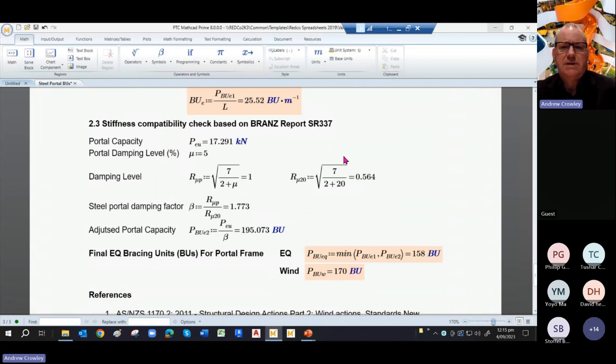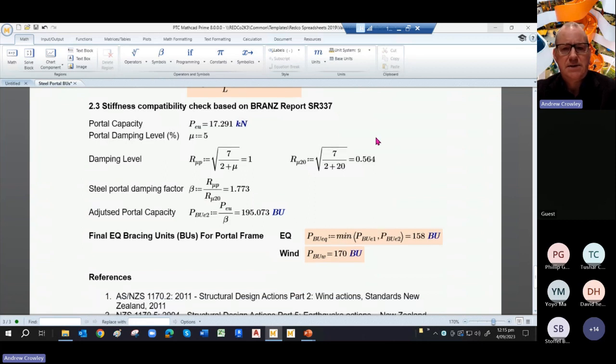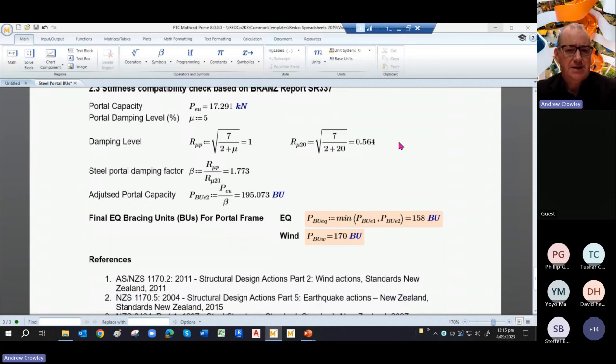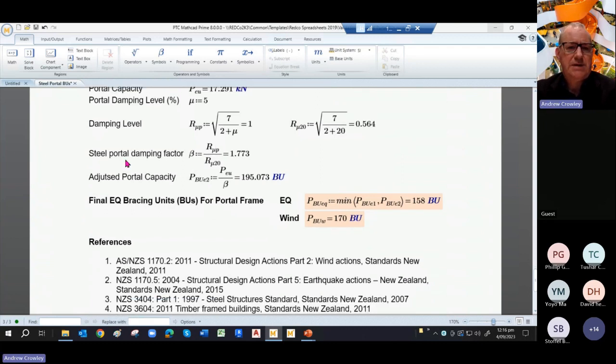Now, a quick check looking at Branz Report SR337, that's the one by Angela Liu. And there's a formula in there to compare the damping that you get in a jib framed house and comparing what you're assuming to 1170 Part 5. Now, normally we're looking at damping levels of about 5%, whereas the jib framed house is looking at damping around 20%. And that's quite a lot of damping.